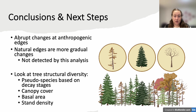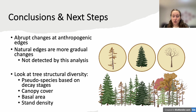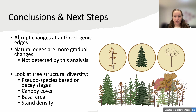The main take-homes from this study are that there are abrupt changes at anthropogenic edges and in harvested areas, and more gradual changes at natural edges which were not detected by this analysis. Perhaps a different shape of wavelet may show different results and be able to detect more gradual change — something to look at in the future. Our next steps are also to look at stand structure and tree structural diversity using pseudospecies based on relative height classes, decay stages, and living or dead status, as well as to investigate patterns in canopy cover, basal area, and stand density using wavelet analysis.